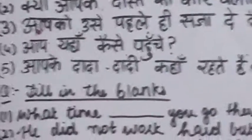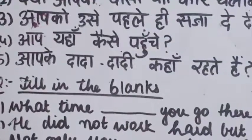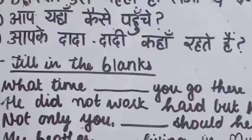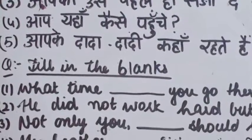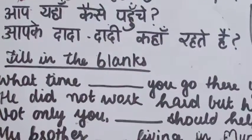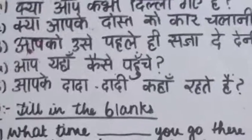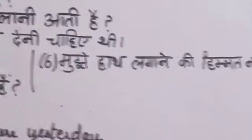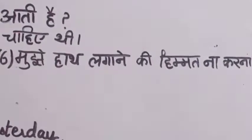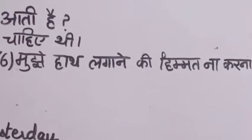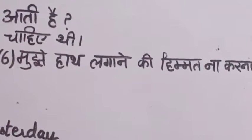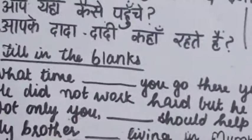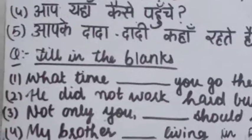Fourth sentence: आप यहां कैसे पहुंचे? Fifth sentence: आपके दादा-दादी कहां रहते हैं? And on the right side, a sixth sentence is also given: मुझे हाथ लगाने की हिम्मत ना करना। So all six sentences given in Hindi — you have to write their English translations.